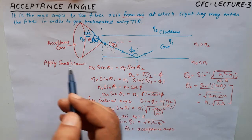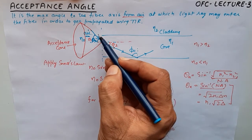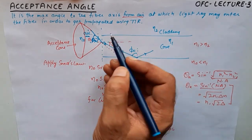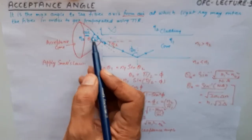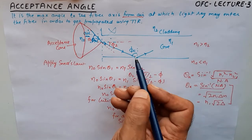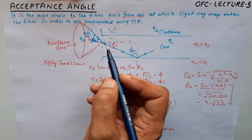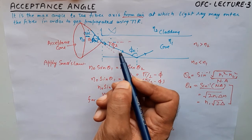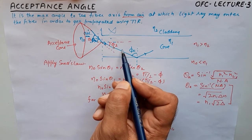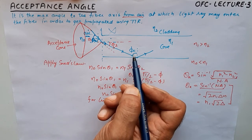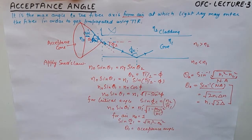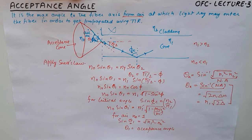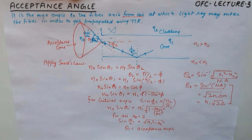The first thing to remember is that the acceptance angle is made at the interface of air and core, not at the air-cladding boundary. Light goes from air into core, and from core it needs to reflect back. The incoming light must hit at greater than the critical angle, and for that it must enter at less than the acceptance angle. That's it for today's tutorial — I hope you liked it. Give it a thumbs up, see you around, bye.